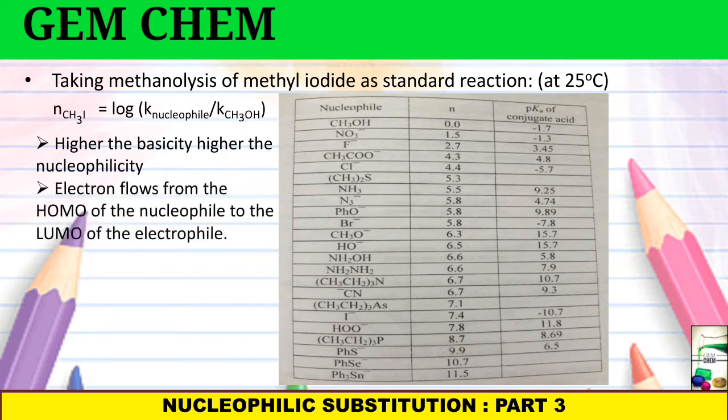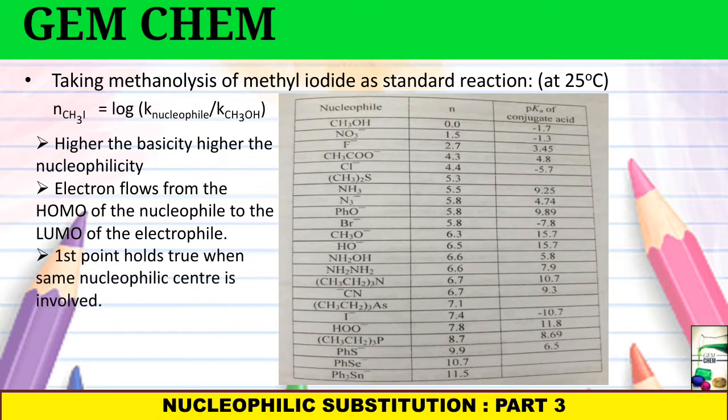This is particularly occurring for a nucleophilic substitution where electrons from the HOMO of the nucleophile, which is the highest occupied molecular orbital, goes to the LUMO of the electrophile. And the first point holds true only when the same nucleophilic center is involved. What does it mean? If you see here, CH3COO-, NO3-, PHO-, here the donor centers are oxygen. So here we can say that nucleophilicity decreases as the basicity decreases.